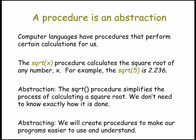That procedure actually represents something very complex — a very complex calculation is going on in the background that we no longer need to remember the details of. That's the beauty of the abstraction. As long as we know that if we give it the number 5, it will give us back the square root of 5, that's all we need to know to use that procedure successfully. We'll be making lots of use of both built-in procedures and procedures that we create as we learn more and more about programming in App Inventor.